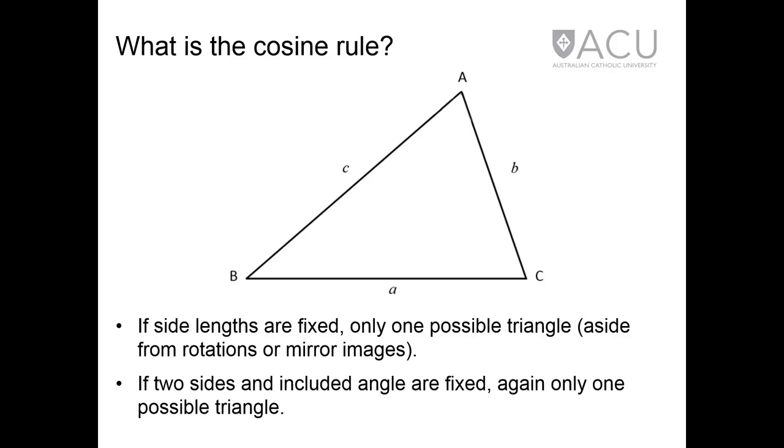If the sides of a triangle are of fixed length, then there is only one possible triangle that can be drawn, barring any rotations or reflections of this triangle. Similarly, if two side lengths are given and the angle between them is stipulated, then again there is only one possible result for the triangle that can be drawn.